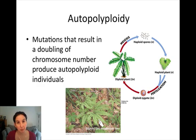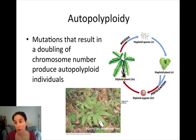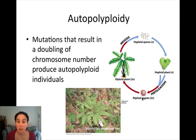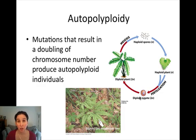When those haploid sperm and eggs fuse — and ferns often self, meaning sperm from one gametophyte can fertilize eggs on the same gametophyte — you get a diploid zygote. That diploid zygote undergoes mitosis, cell differentiation, and growth to produce a diploid plant.